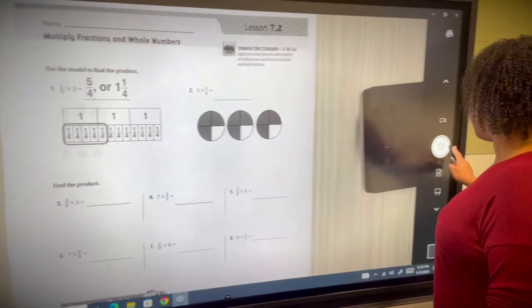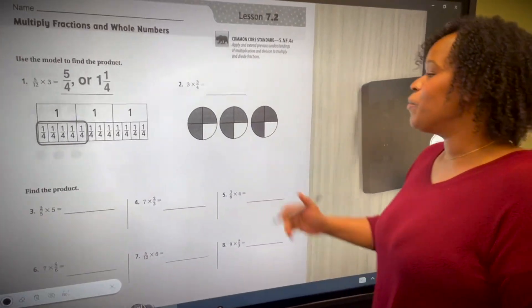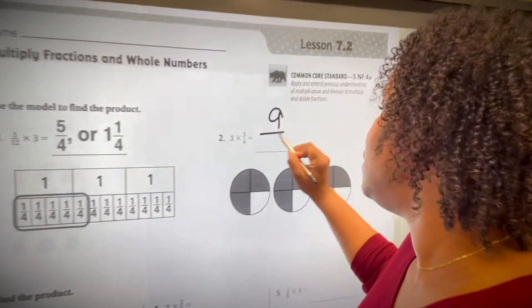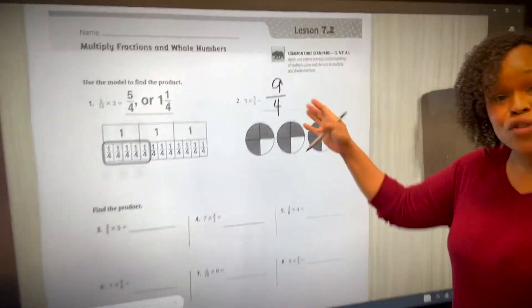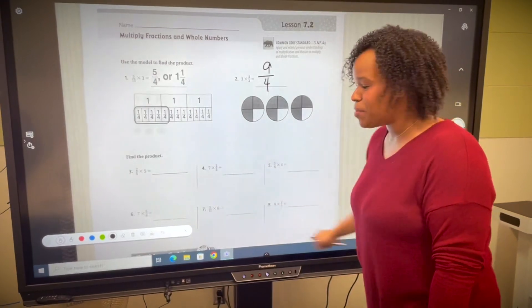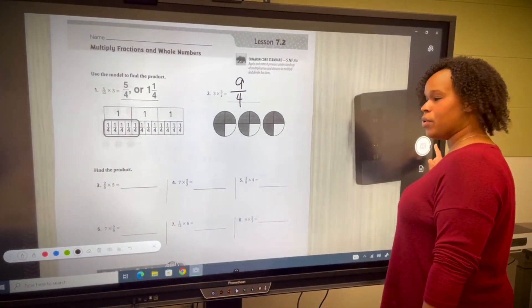We're going to pull out our annotate tool and we're going to solve our problem. Now I want to crop here so that I can take some of the problem that we didn't use and transfer it over into the whiteboard.